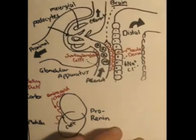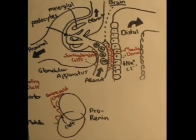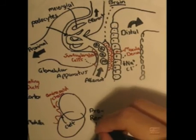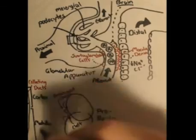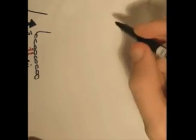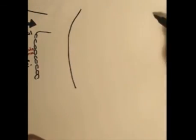These cells help convert pro-renin into renin. How does it do this? Well, let's take a detour and zoom into this section where the arterioles and the head of the nephrons meet.